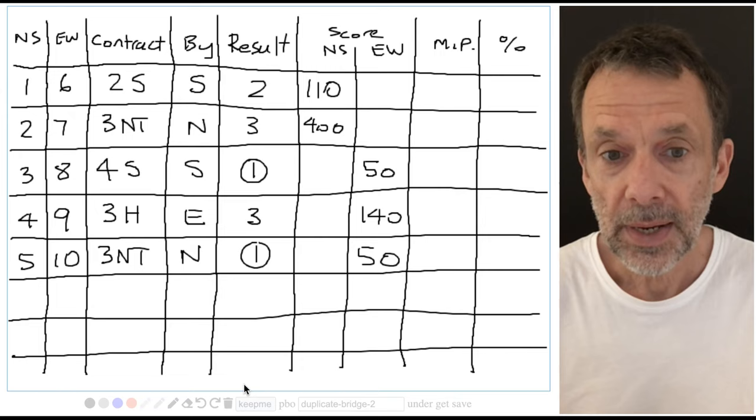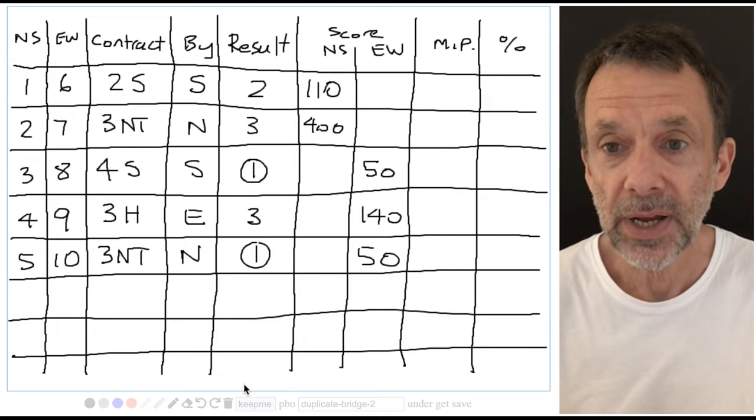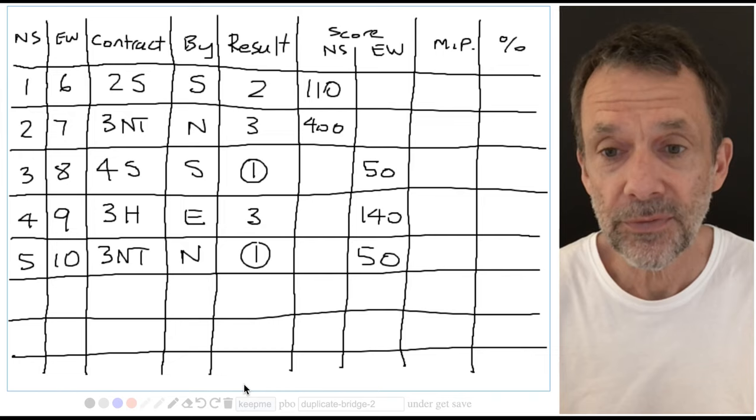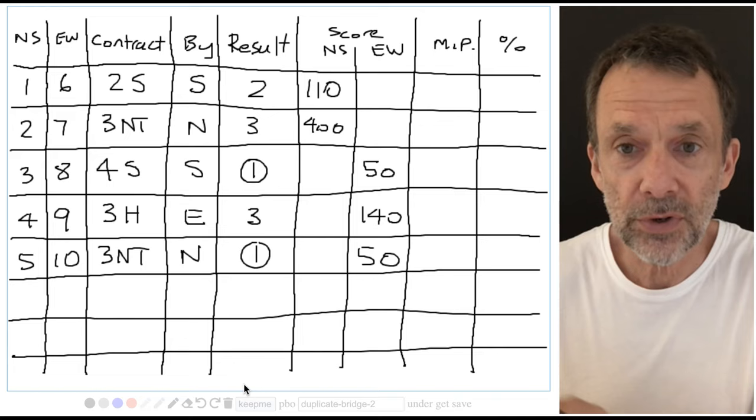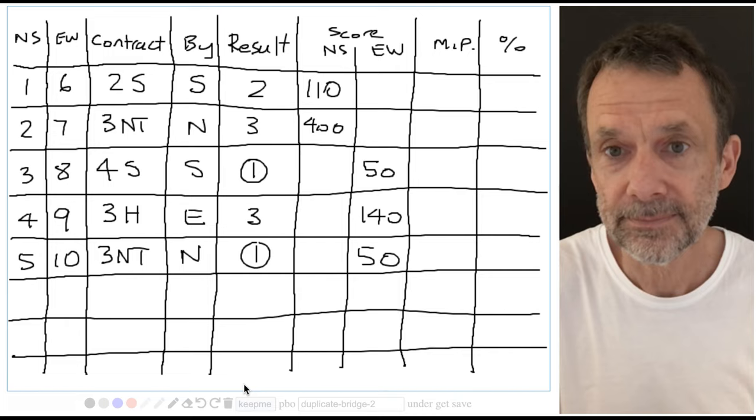Have a look at line four. East was in three hearts making three for 140 to east-west. I could just as accurately have written minus 140 to north-south. Whatever is plus for east-west is minus for north-south and vice versa.